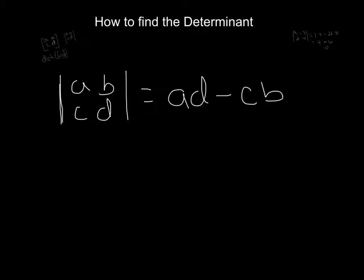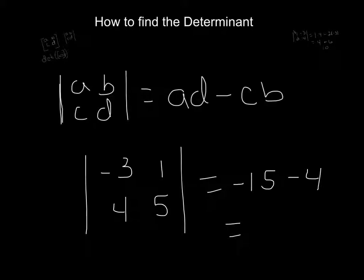Another example. Let's throw another one up here just to see how we're doing. Say we had -3, 1, 4, 5, and we want the determinant. At this point, stop the video and see if you can do it. So here's what it would be: it would be -15 minus 4, or your determinant would be -19.